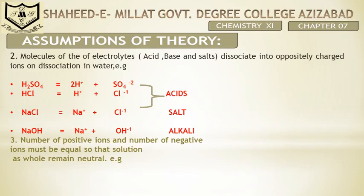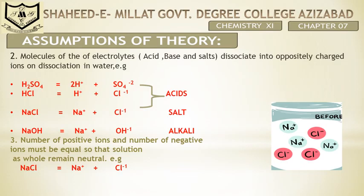The number of positive ions and number of negative ions must be equal so that the solution as a whole remains neutral. For example, taking NaCl, as shown in this diagram, the number of positive sodium ions equals the number of negative chloride ions. This picture explains that when total positive and negative ions are equal, the whole solution is neutral.